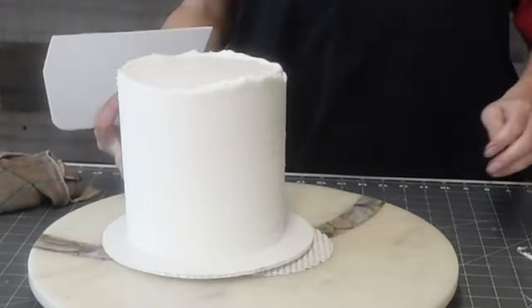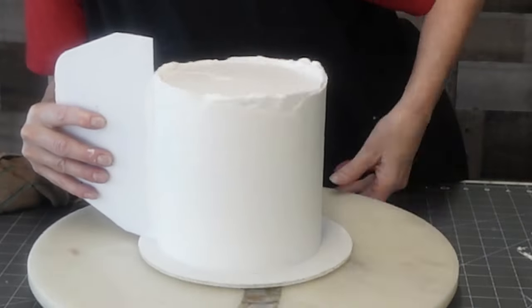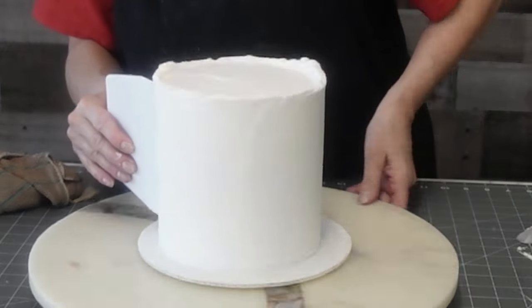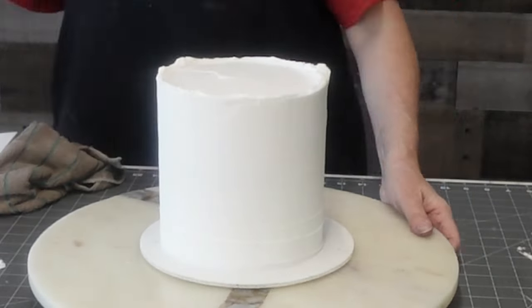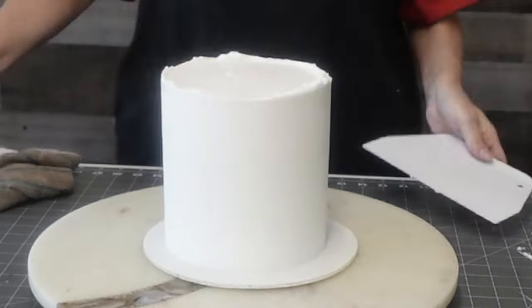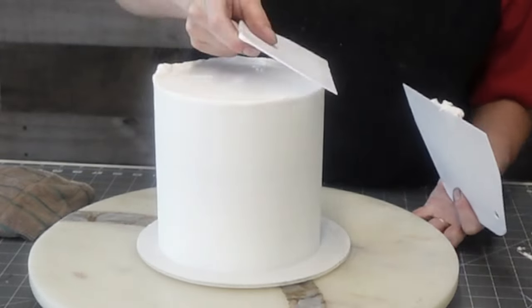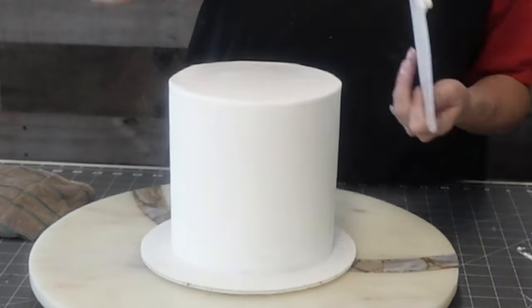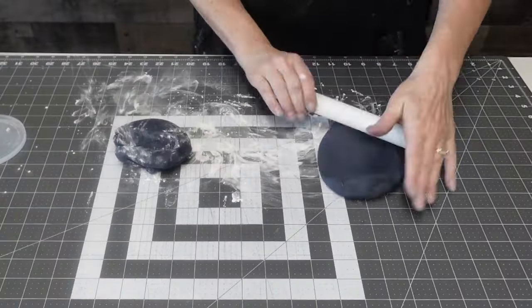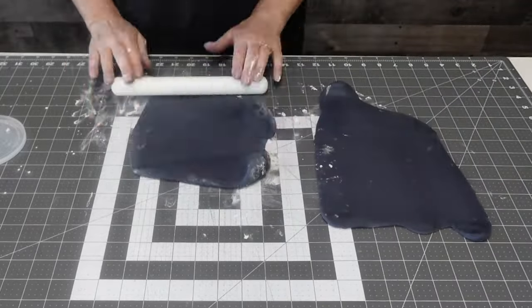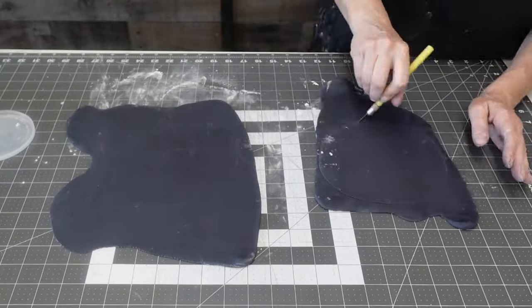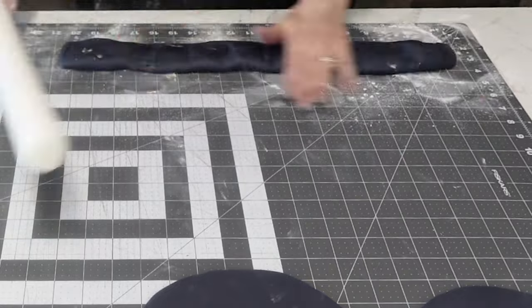These were all crumb coated, which—a crumb coat just locks in your crumbs. It's a thin coat of buttercream to lock in your crumbs so your final coat is a smooth perfect finish and there's no crumbs coming through. I set them in the freezer to chill for 10 minutes after the crumb coat, and then I bring them out and do my final coat of buttercream. I find when they are chilled in the freezer, your buttercream kind of sets up as you're working with it.